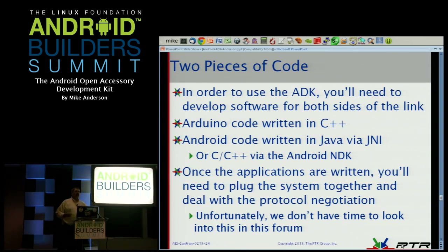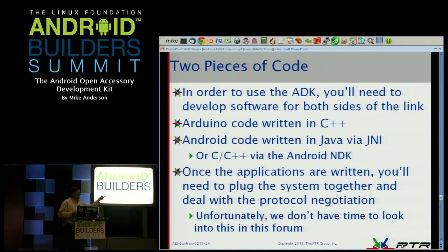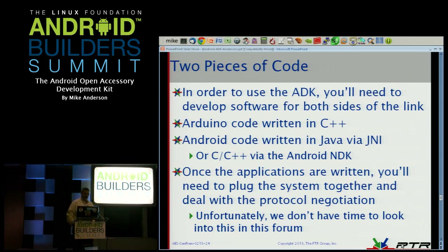When we're working with the ADK, we have to think in terms of writing two pieces of code. We have the C and C++ piece of code that sits on the board, and then we have the Java piece of code that runs on the Android device. You can write the Android code in Java, or you can use C and C++ with the NDK. If you have something that is really high speed and you can't afford the overhead of the Java framework, then by all means drop into the NDK — the NDK is also enabled with the same protocol. We can do everything completely in C++ on both the Android device and the Arduino, if necessary.